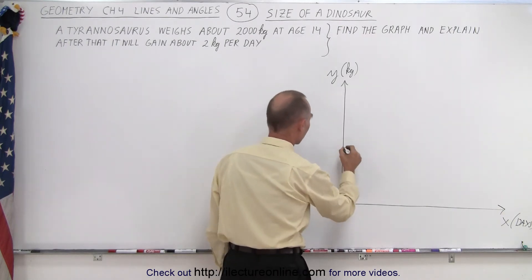We can say that we're going to start this graph at 14 years, so that would be zero days. After zero days, the Tyrannosaurus Rex has a weight of 2,000 kilograms.